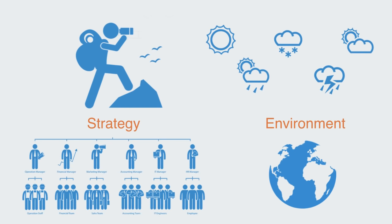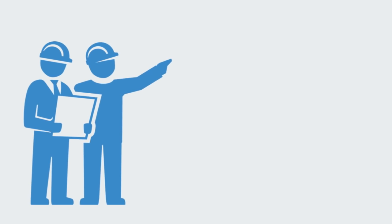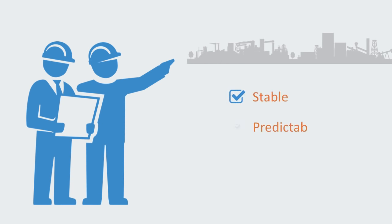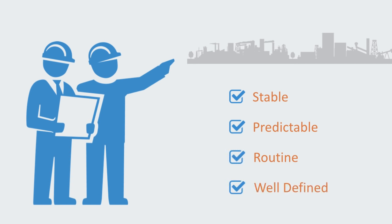Owing to its origins within industrial age manufacturing, much of our modern management theory is focused upon relatively stable, predictable, routine environments, where there is one relatively clear objective. These factors make possible an approach to strategy that is based around a few key concepts and methods.